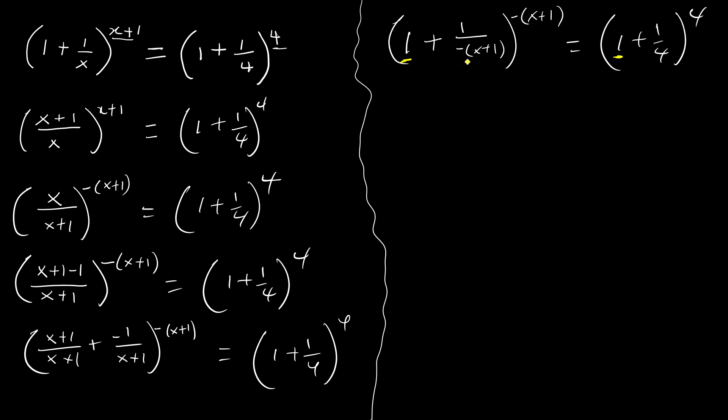Let's look at the powers. We have negative one multiplied by x plus one, and we have the same thing here. And we have four here - we have the same thing here. So what it means is that minus x plus one is the same as four.